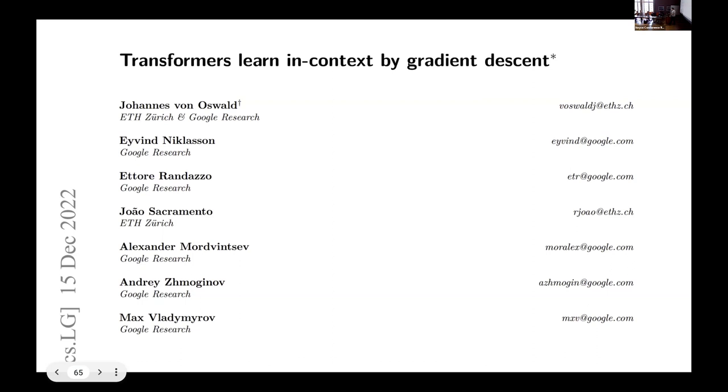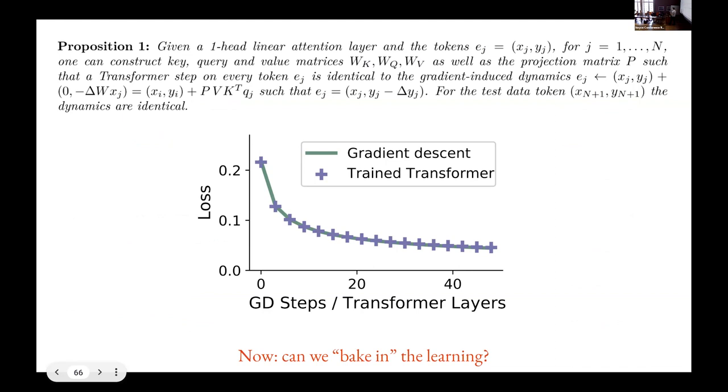So what Johannes and colleagues realized is that you could actually make a construction. If you just take a single attention layer in a transformer, you can make a construction that shows that it can literally do a highly optimized gradient descent step using one attention layer and transform the weights or the action of the network as if a gradient step had been taken. And moreover, that if you add additional layers, each additional layer can take an additional gradient step. So this construction is a little bit weird, but then when you actually test this empirically, you find that that's exactly what is going on. So the crosses here are trained transformer with N transformer layers, and the green lines are gradient descent steps. So it looks like that's exactly what's going on.